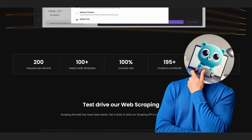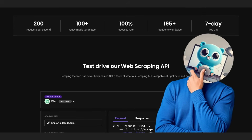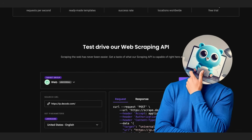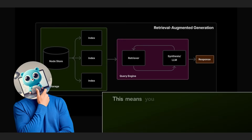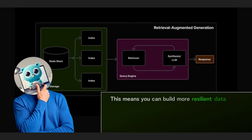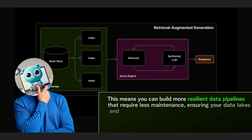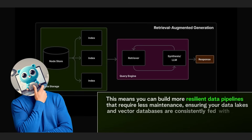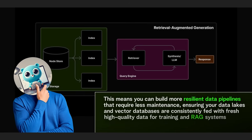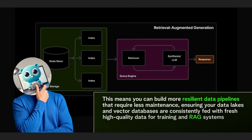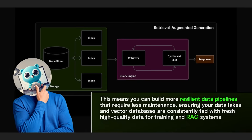It abstracts away the fragility of individual websites, handling bot detection and site changes for you. This means you can build more resilient data pipelines that require less maintenance, ensuring your data lakes and vector databases are constantly fed with fresh, high-quality data for training and RAG systems.